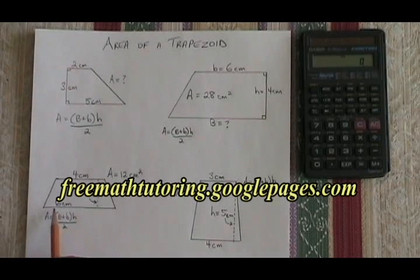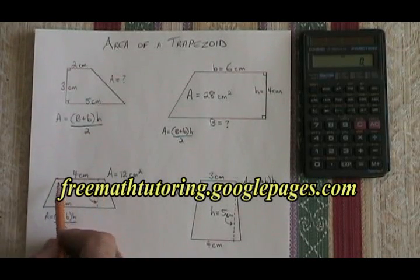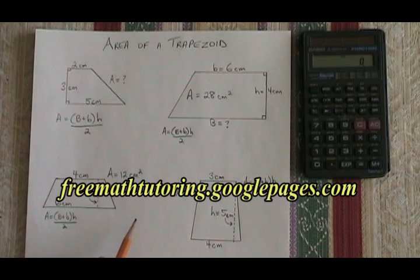In an isosceles trapezoid, there is still a longer base, which is parallel to a shorter base. So that tells you where to place the values for big B and little b.